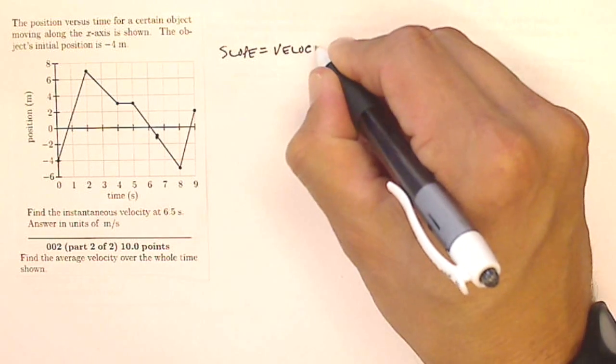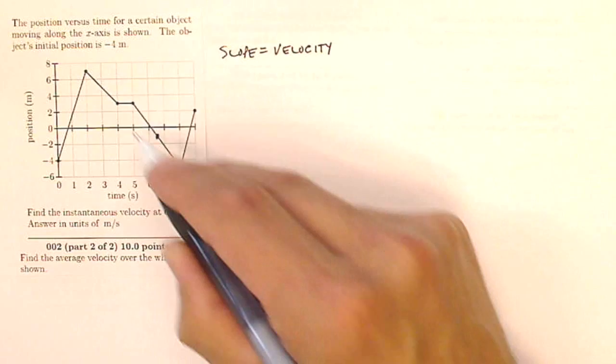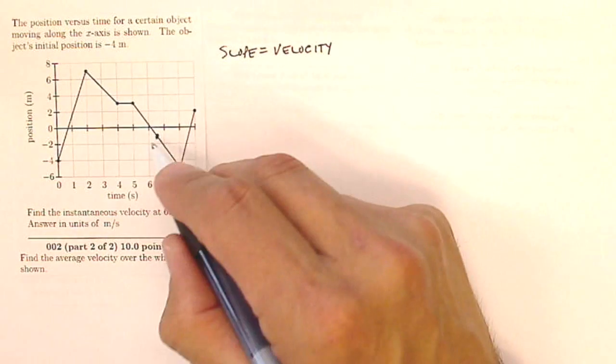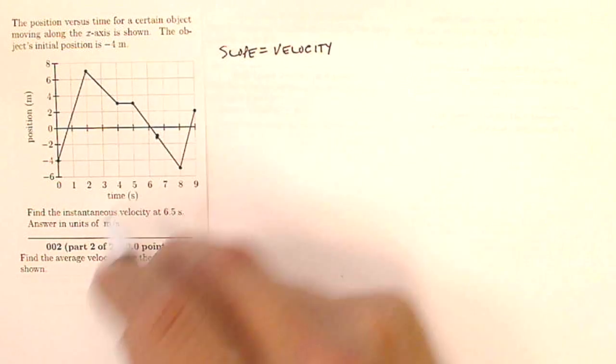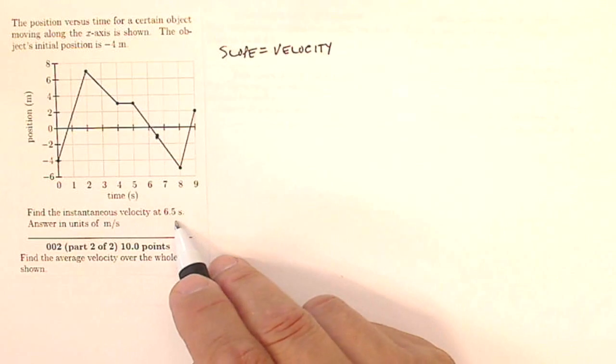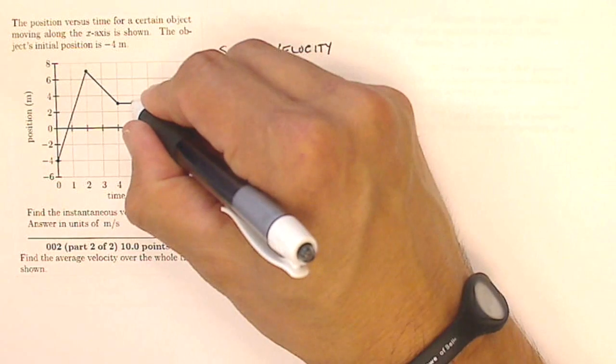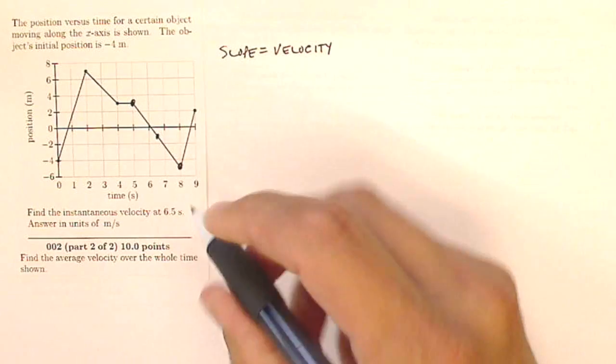Conveniently, any straight line has a constant slope, so it has a constant velocity. So instead of trying to find something out about that point, if I want the instantaneous velocity at six and a half seconds, what I really should do is find the slope of this whole line segment from here to here.